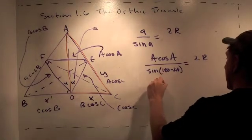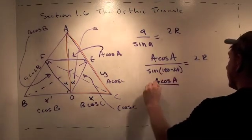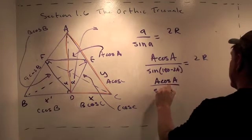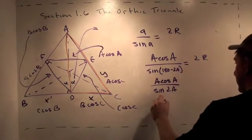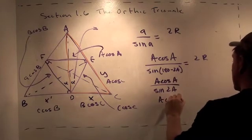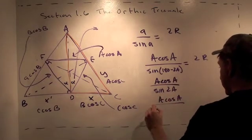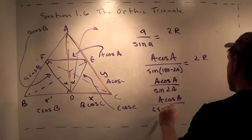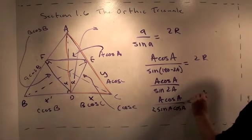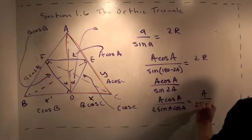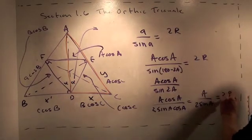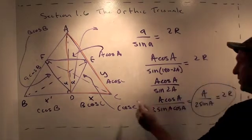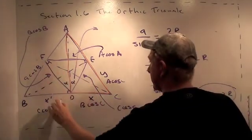Well, this is the same as A cosine A over sine 2A, if you remember your trig identities, which is the same as A cosine A over 2 sine A cosine A, which equals A over 2 sine A. And that's 2 times the radius of the circumscribed circle of the orthic circle.